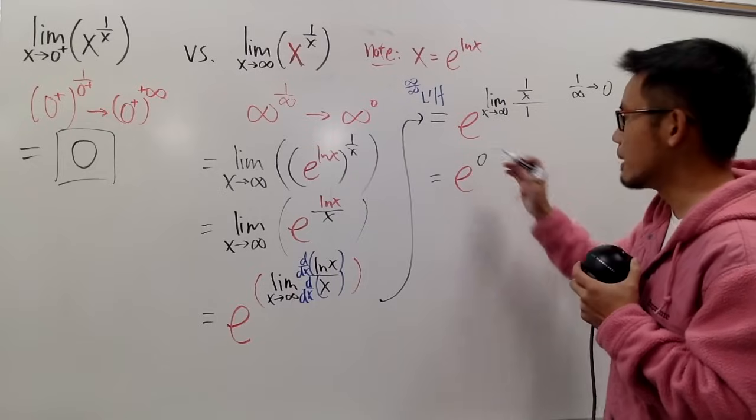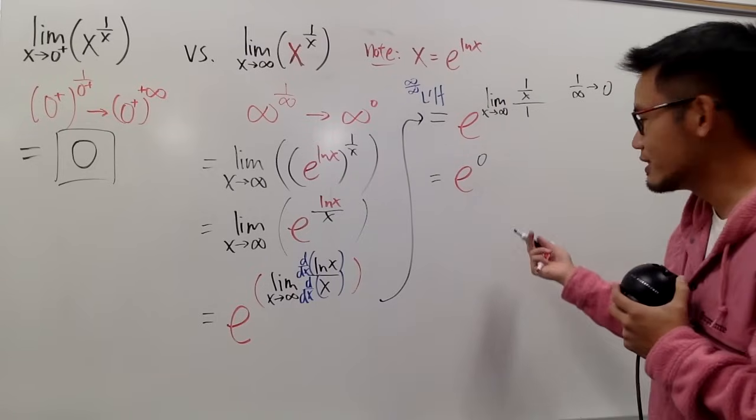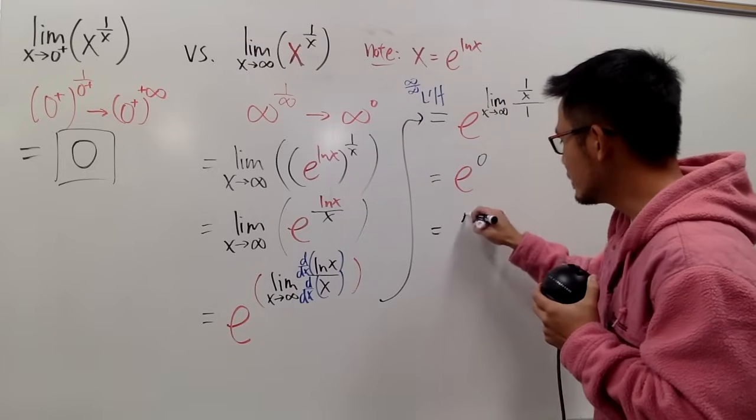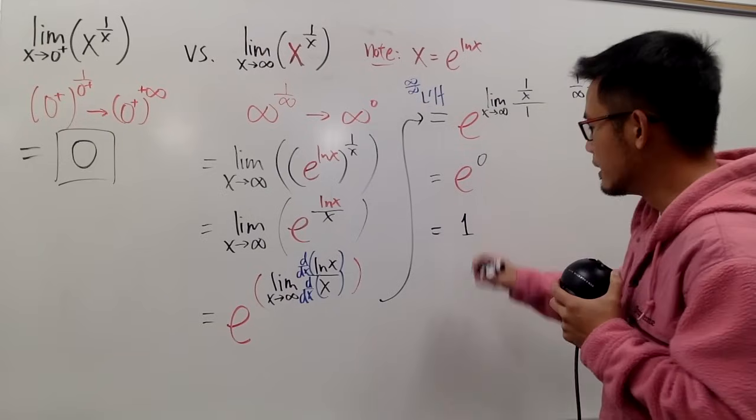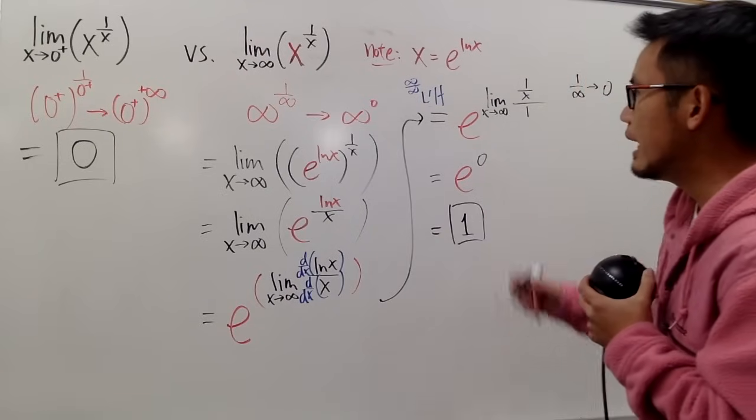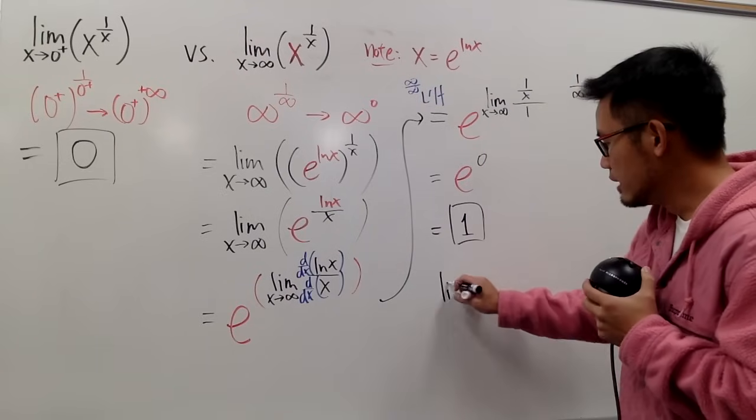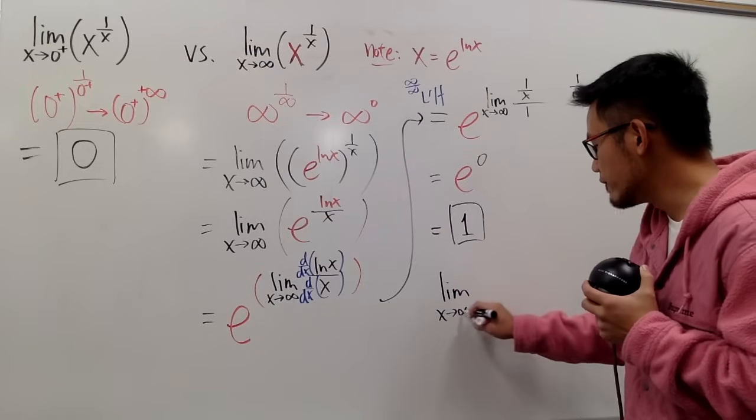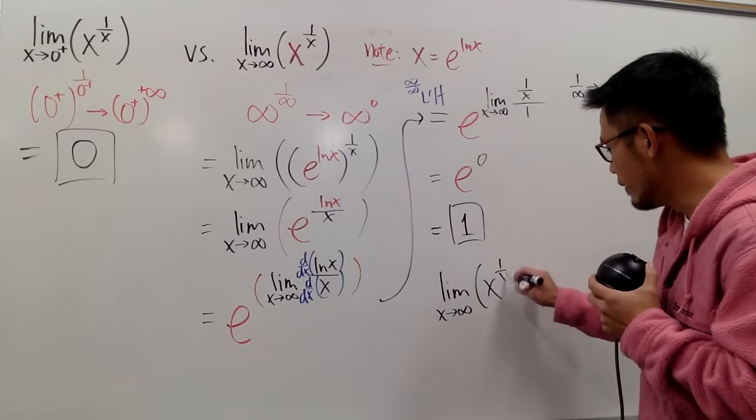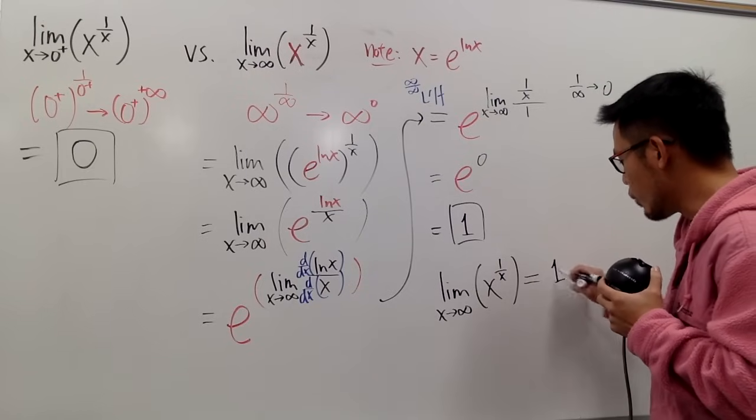we have e to the 0's power like this, and of course, we can work this out. This is just equal to 1, right? So, that's the answer, and let me just write this down legitimately. The limit as x goes to infinity of x to the 1 over x. This right here is equal to 1.